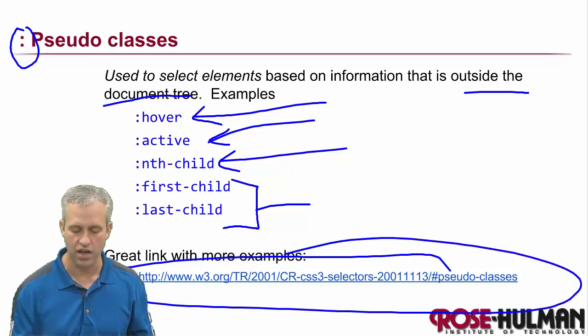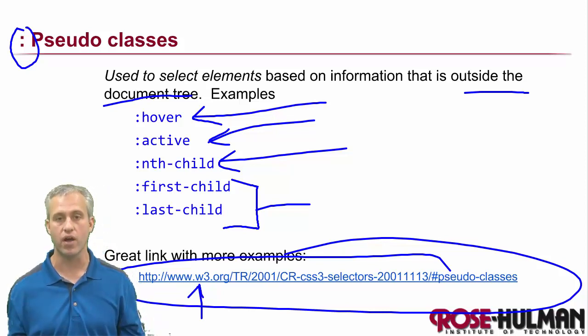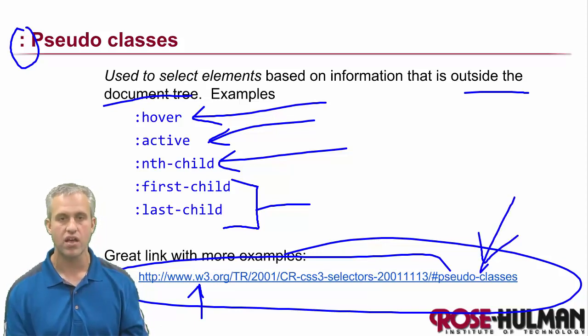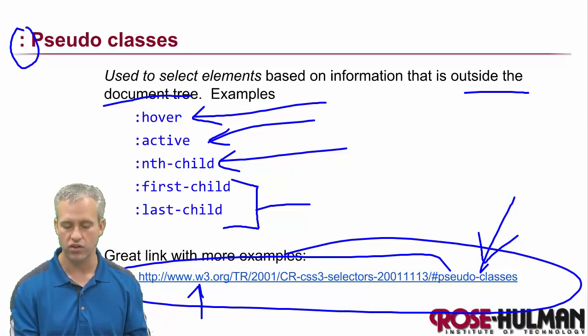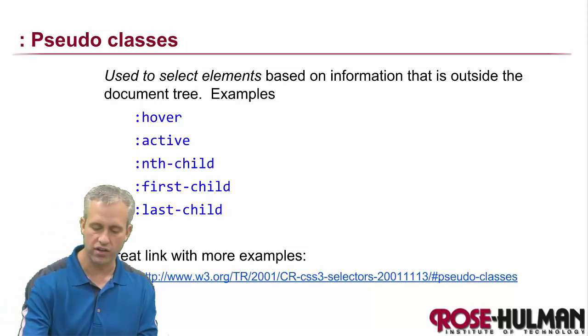Again, there's a really nice bit of information here from the standard. W3 makes all these standards. It's a collection of companies, primarily, who decide what the standard should be. And this is when they were talking about pseudo classes. This one got approved. And so you can see all the different things that you can do with pseudo classes. It's more fun to look at examples, though.